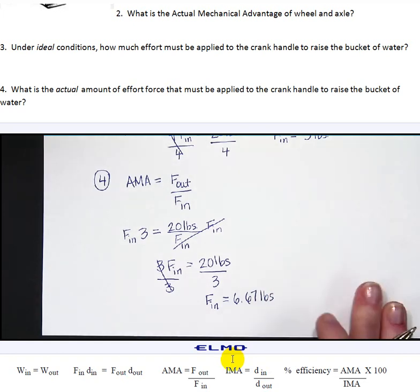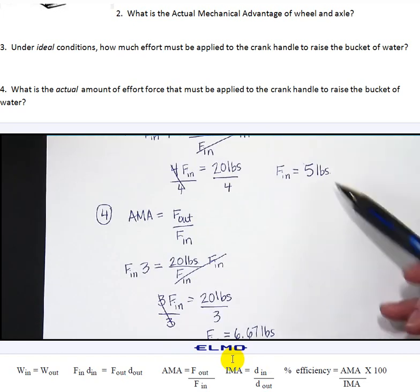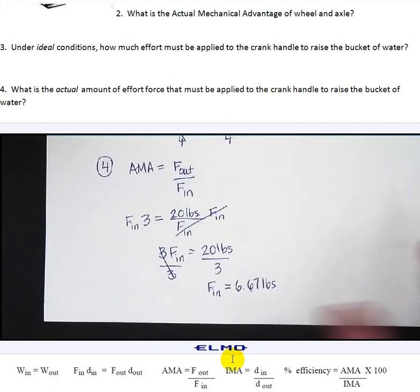So now instead, in an ideal world we would only have to use 5 pounds of force to lift this bucket. But because we're having to work against friction and gravity, then it's going to really require 6 and 2 thirds pounds of force to lift the bucket. And there is another example problem for wheel and axle.